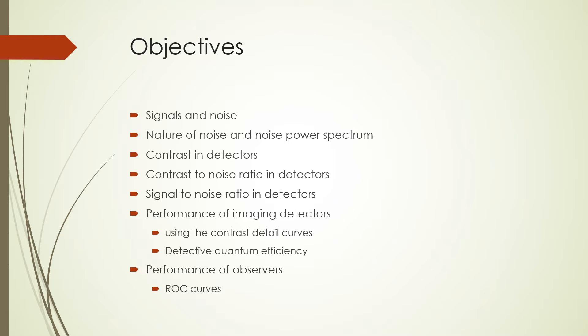After today's lecture, students will understand the nature of noise and its frequency dependence by learning about the noise power spectrum. Students will also learn about contrast in detectors and the contrast to noise ratio. We shall also learn about signal to noise ratio in detectors. Students will understand the performance of imaging detectors using the contrast detail curves for qualitative analysis and detective quantum efficiency for quantitative analysis. We shall finish up by learning about the performance of observers using receiver operating characteristic curves.